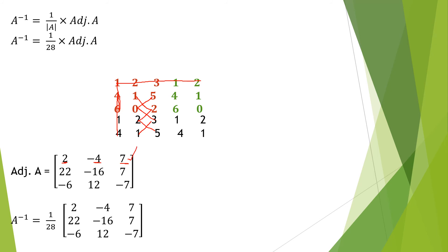For the second row: 5 times 6 minus 4 times 2 gives 30 minus 8, which is 22. Next, 2 times 1 minus 3 times 6 is 2 minus 18, giving minus 16. Next, 3 times 4 minus 5 times 1 is 12 minus 5, giving 7. We are done with the second row.